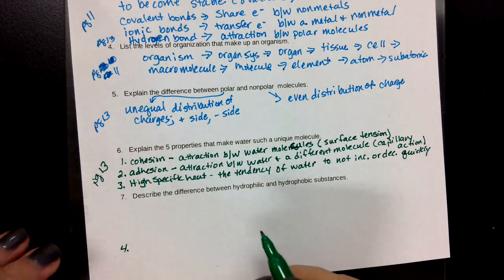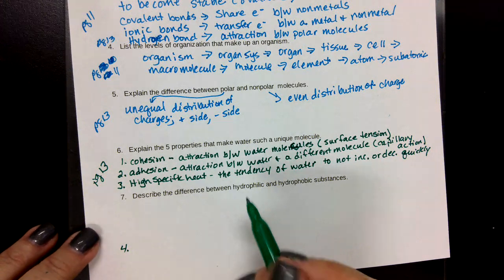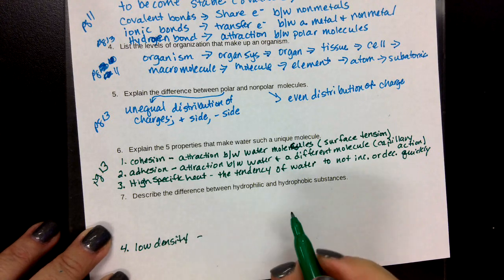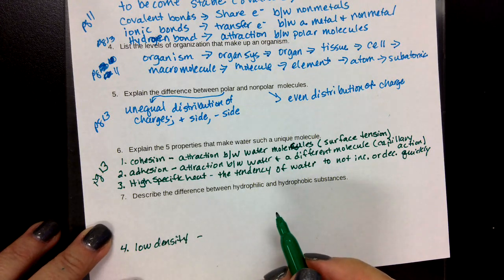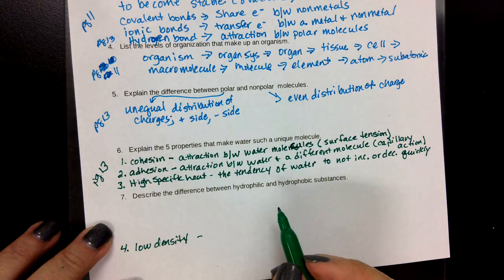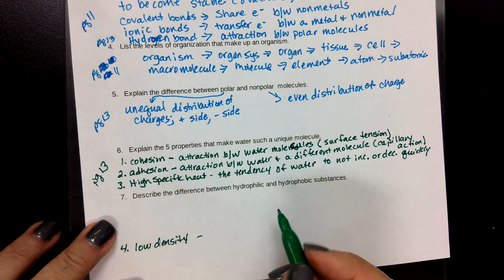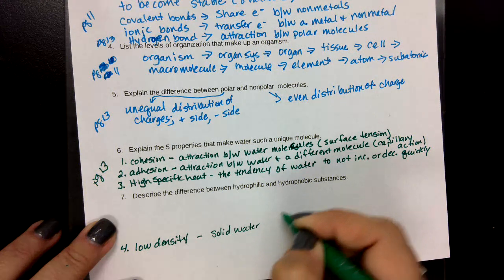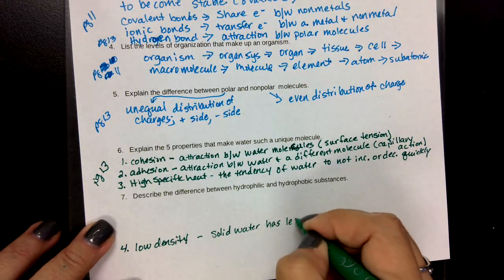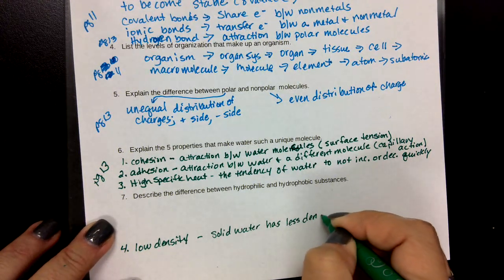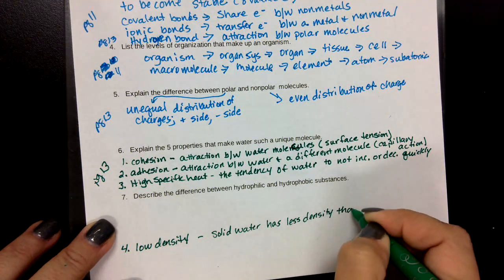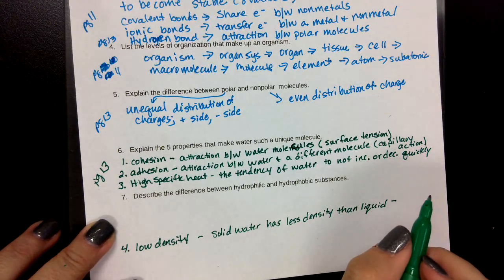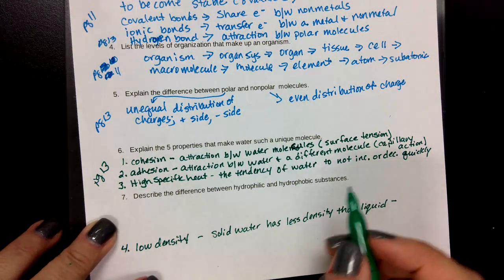Density, so low density. Solid water has less density than liquid, and the reason is it allows for life to live under frozen surfaces.